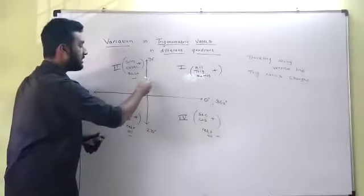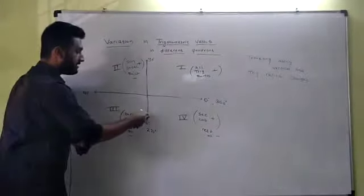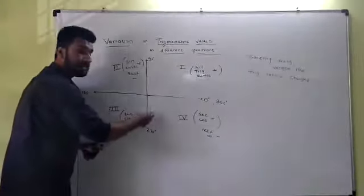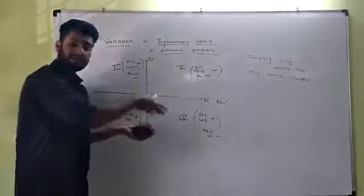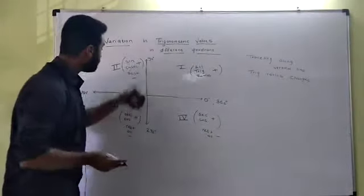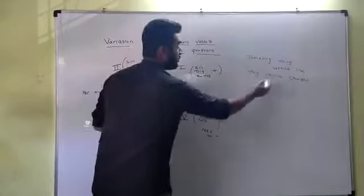That means sin 90 minus theta, sin 90 plus theta, sin 270 minus theta, sin 270 plus theta. Or I can say any trigonometric ratios for that. Trigonometric ratios change.